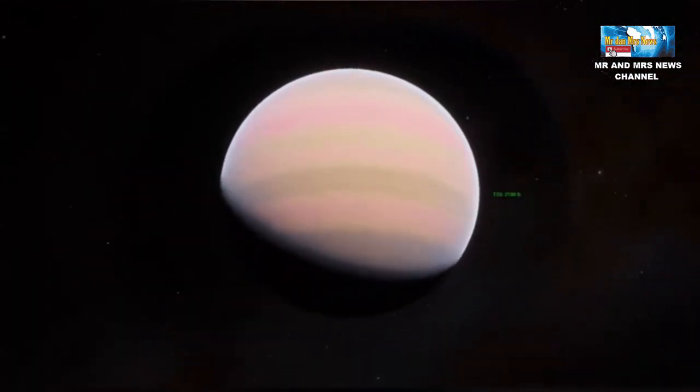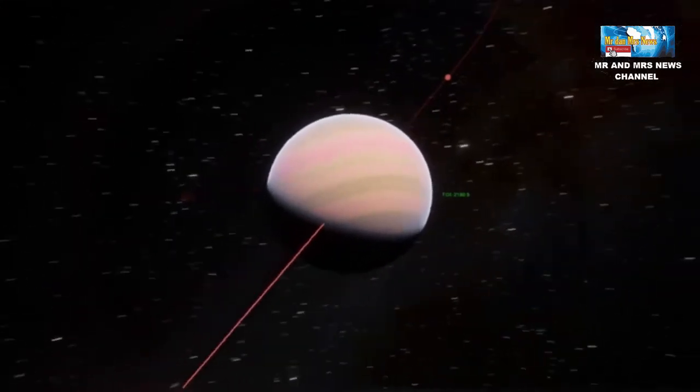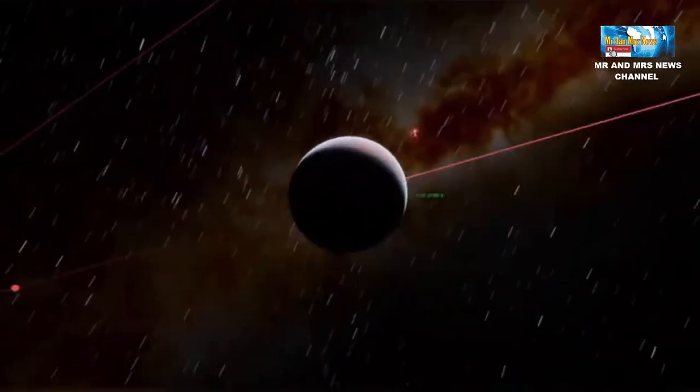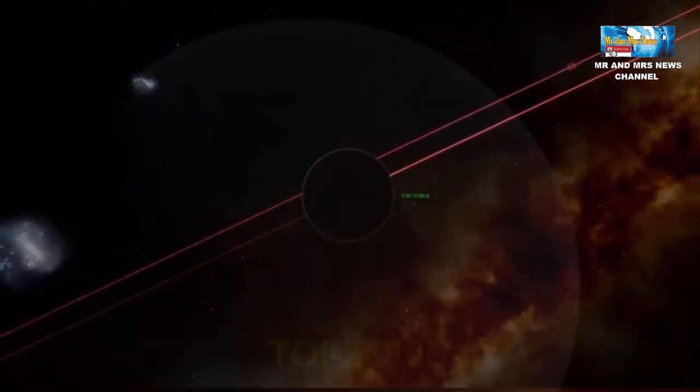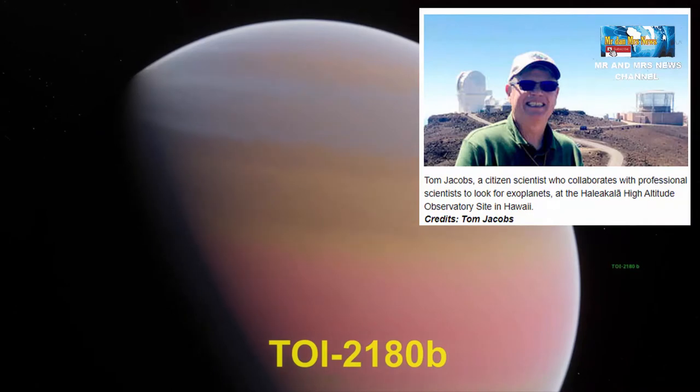Menemukan dan menerbitkan TOI 2180B adalah upaya kelompok besar yang memperlihatkan bahwa astronomi profesional dan ilmuwan warga berpengalaman dapat bekerjasama. Ini adalah sinergi terbaik, kata salah satu ilmuwan warga sipil Tom Jacobs yang mengajudkan diri untuk proyek tersebut.